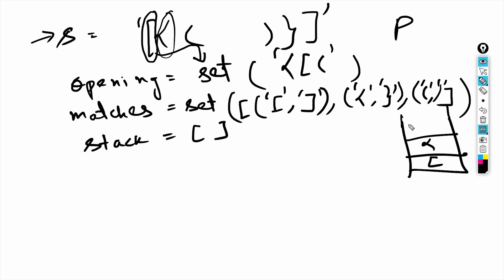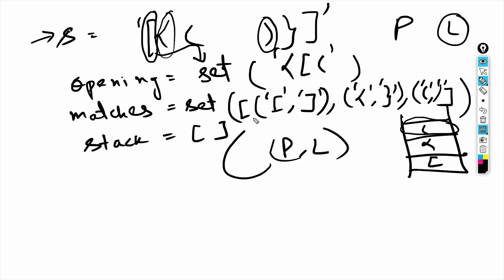When we encounter a character that is not present in the 'opening' set, we'll create a variable l. We'll pop an element out of the stack and store it in l. Then we'll put an if condition to check if the pair (l, p) is present in the matches map.